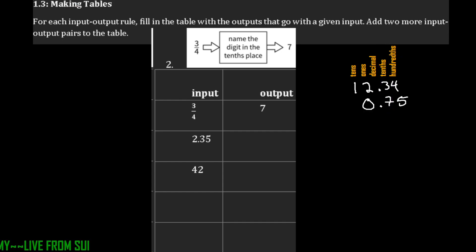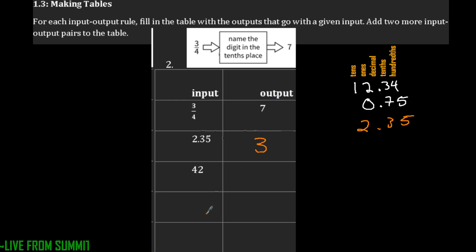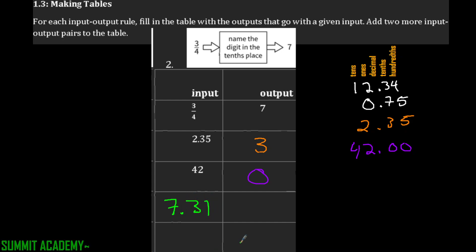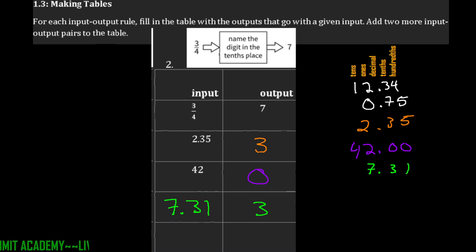For 2.35, our output is going to be the tenths place, which is 3. When we have 42, if we write 42.00, the tenths place is going to be 0. For 7.31, that output is going to be 3, since that's where the tenths place is. Lastly, if I give you 4.95, pause and give me that tenths place.